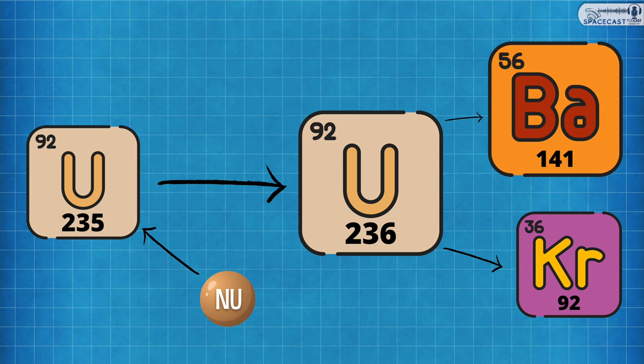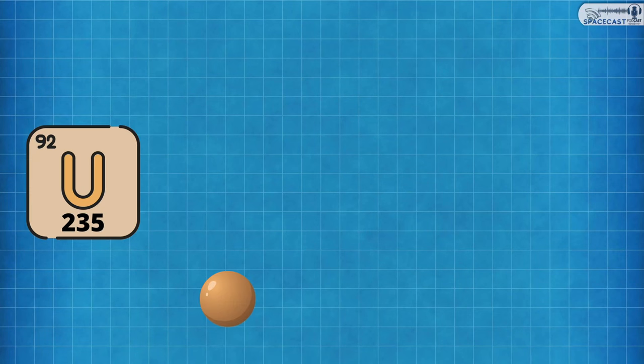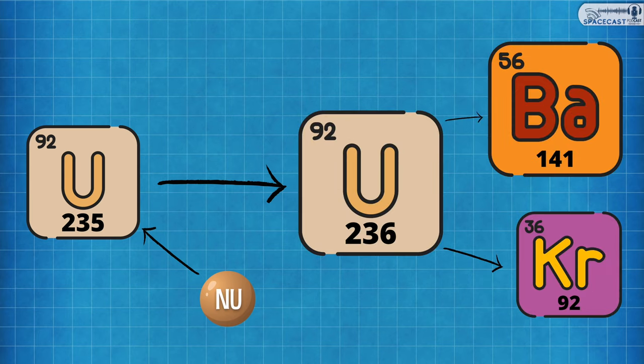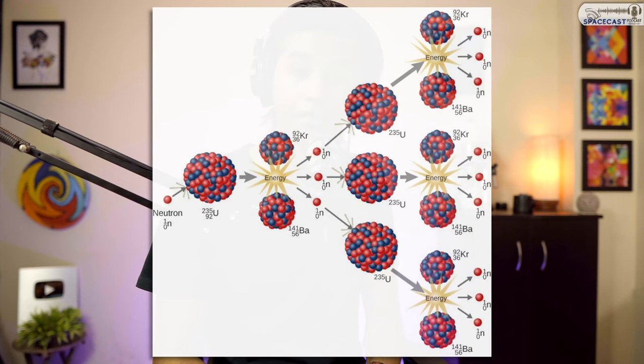Otto Hahn realized that made sense because when you match atomic numbers and atomic mass, you account for the products — but what about the loss of three atomic numbers? Those were the three neutrons produced. When you bombard a neutron into U-235, you get U-236 which is very unstable, splits, and you get barium, krypton, and three neutrons. These three neutrons will then hit another U-235 atom, creating three more neutrons, hitting three more U-235s — a chain reaction — and that is what makes atomic energy so devastating.